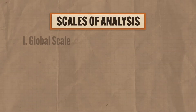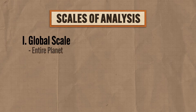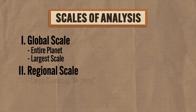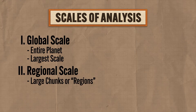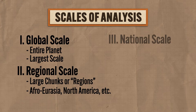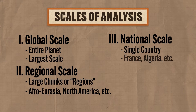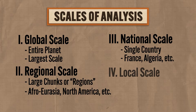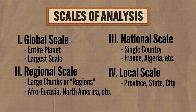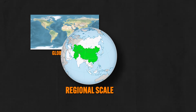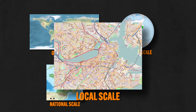There are basically four scales of analysis you need to know. First, there's the global scale, which considers data across the entire honking planet — it's the largest of all the scales. Then there's the regional scale, which zooms in on large chunks of the planet known as regions, like Afro-Eurasia or North America. Then there's the national scale, which considers data across a single country, like France or Algeria. And the smallest scale is the local scale, which considers data within a province, a state, a single city, or even down to a neighborhood. This map shows a global scale, this one a regional scale, this one a national scale, and this one a local scale.